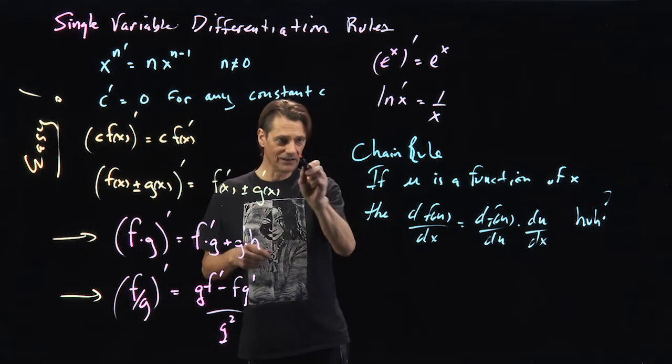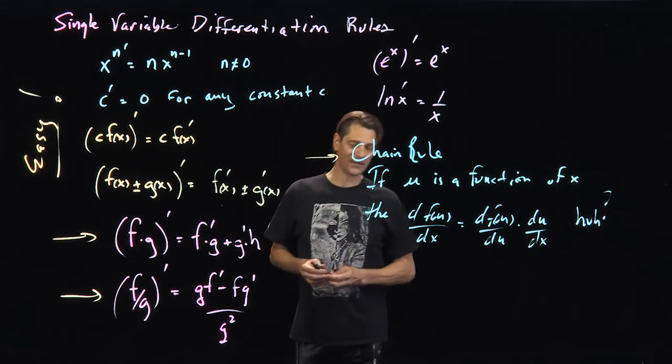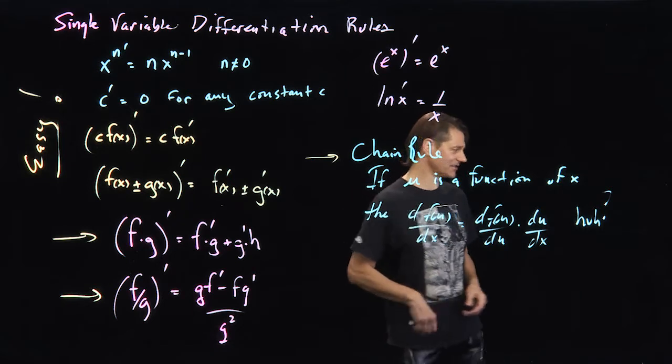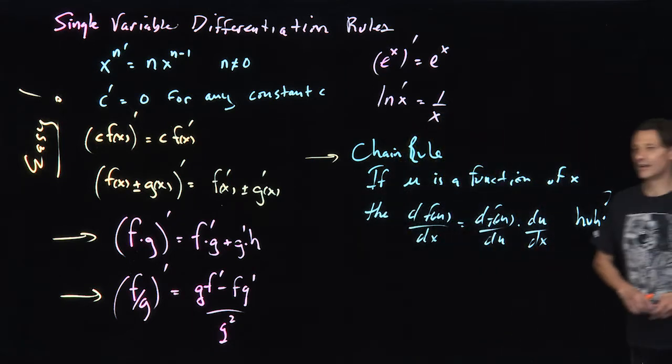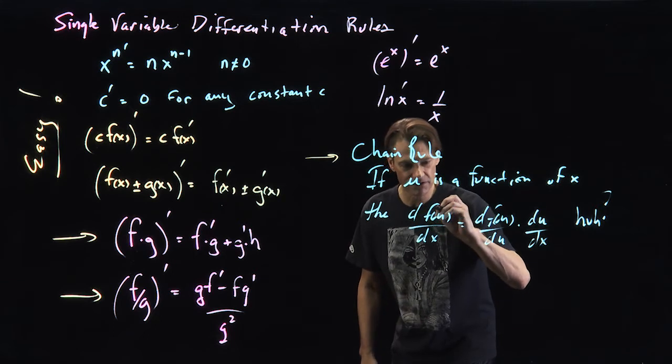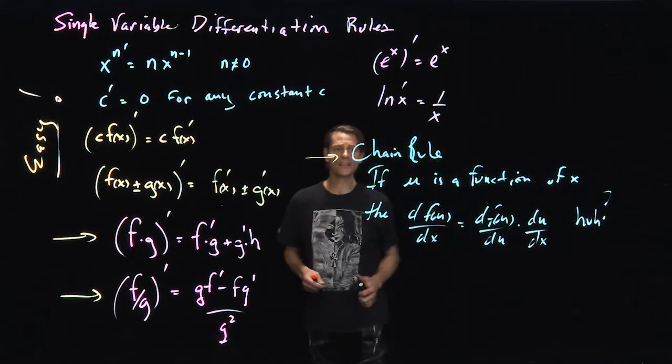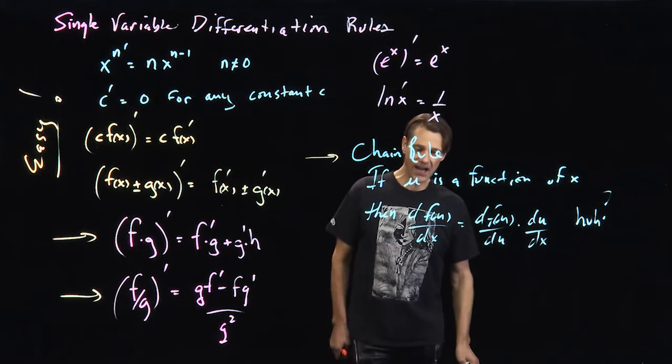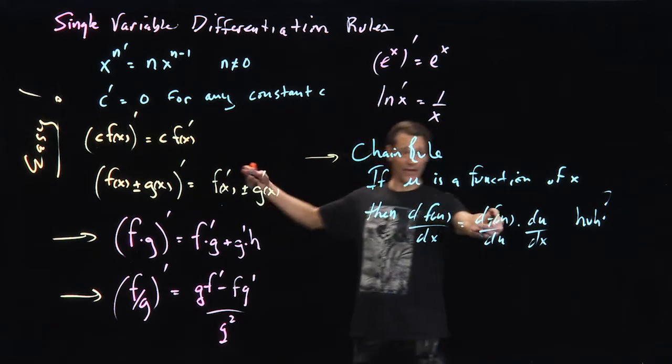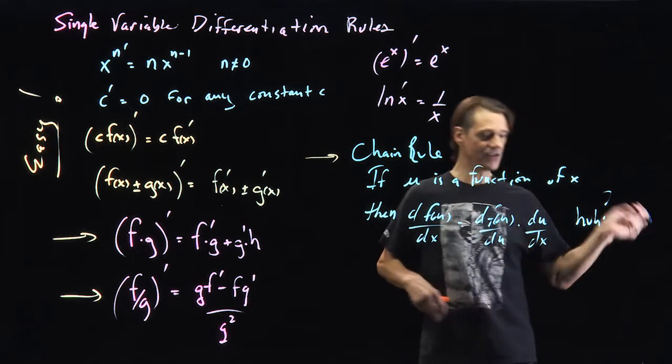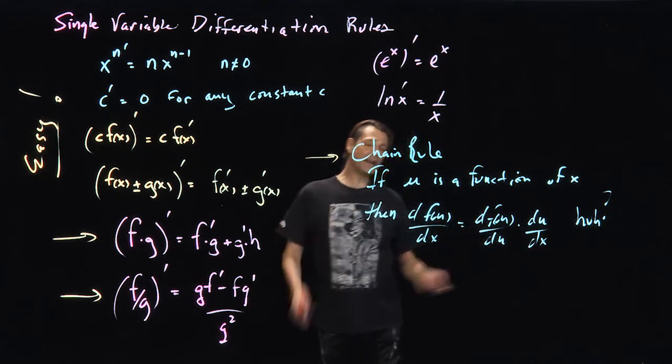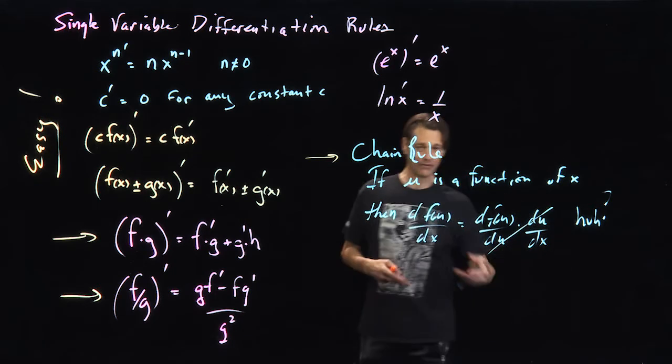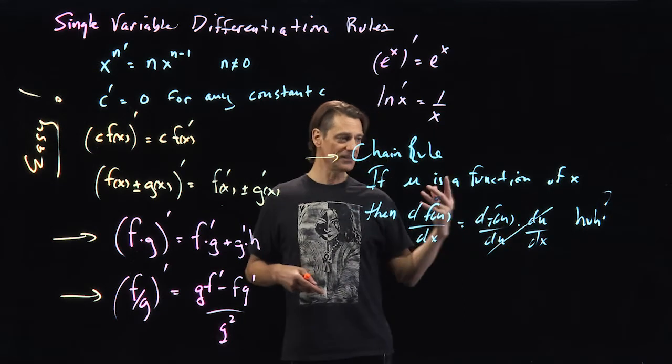Chain rule. The chain rule is, in every book, it's always explained very haphazardly or almost incomprehensibly. The chain rule says, if u is a function of x, then the change of f of u with the change of x is the change of f of u with the change of u times the change of u with the change of x. It kind of makes sense. Incidentally, it's supposed to look like this. That's why the notation, this notation is Leibniz's notation. This is kind of why they do this.